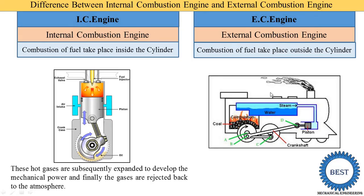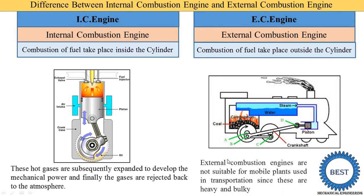About 40 to 50 years back, the steam engine was used in railways to run trains. But right now, trains run by using electric engines — by using electric power. In the steam engine, combustion takes place outside the cylinder. The heat energy of the combustion gas is supplied to water, which is converted into steam, and steam is supplied inside the cylinder. Combustion takes place here in the furnace, and this is known as the external engine.